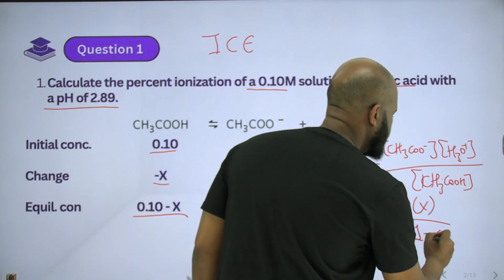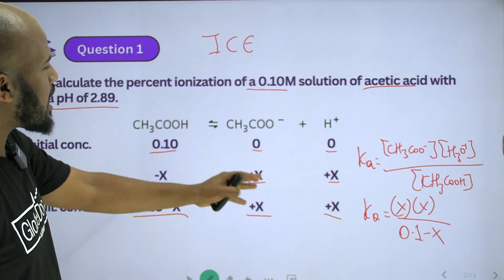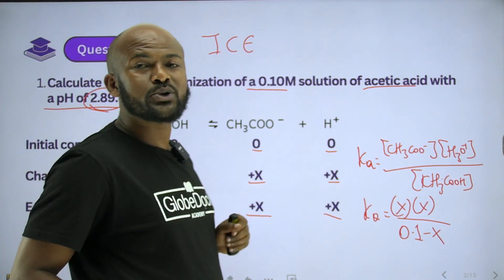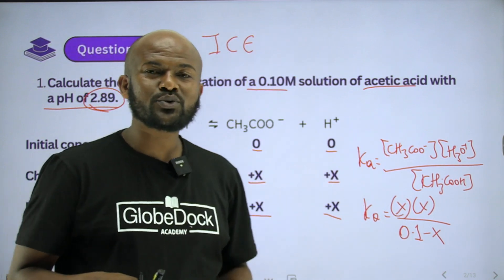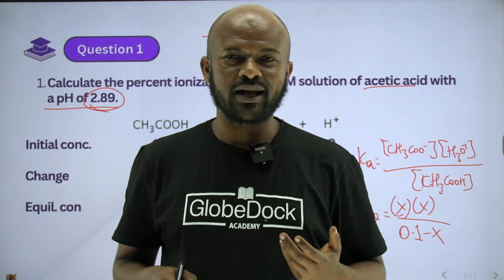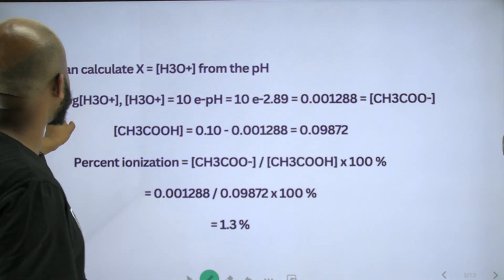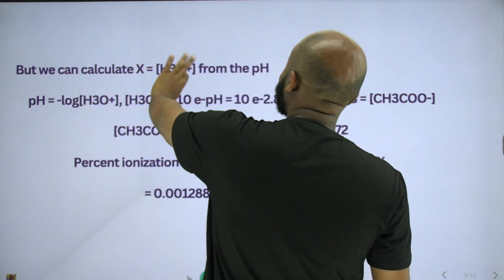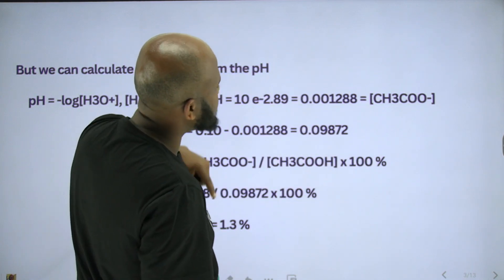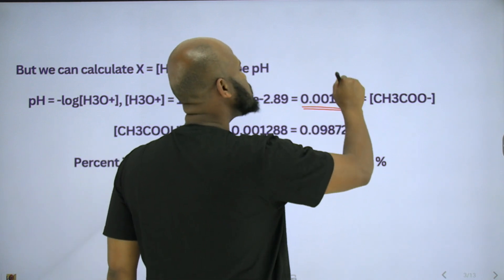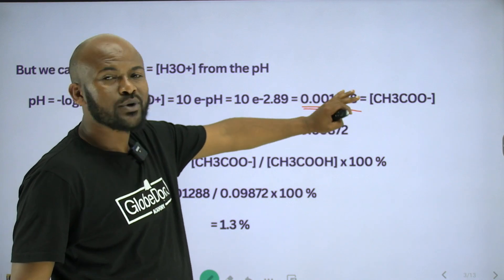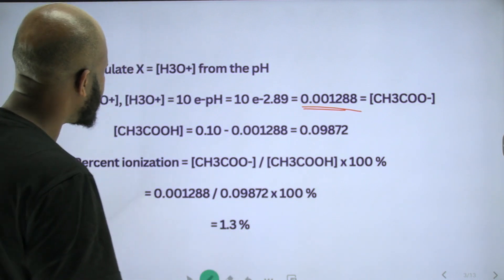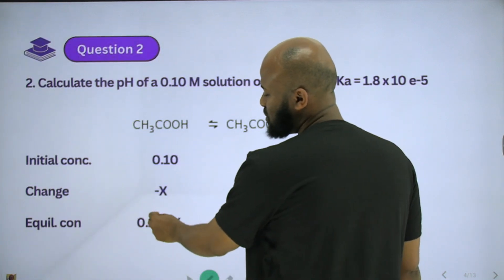Let's substitute. Ka is equals to x times x divided by 0.1 minus x. So Ka equals x squared over 0.1 minus x. Since the hydronium ion concentration is known from the pH, we can find x directly. The hydronium ion concentration comes from pH: concentration equals 10 to the minus pH.